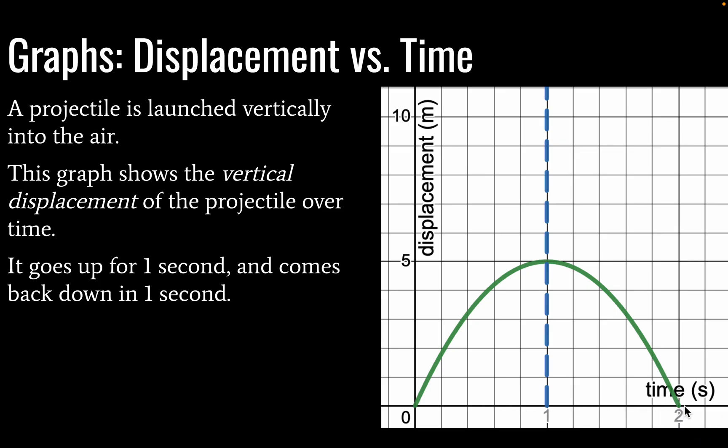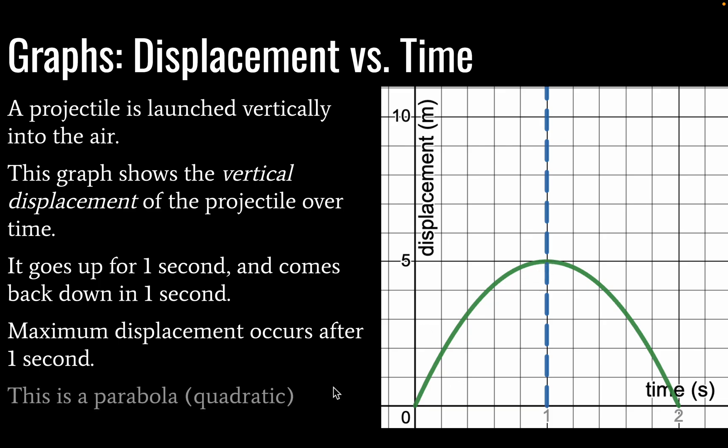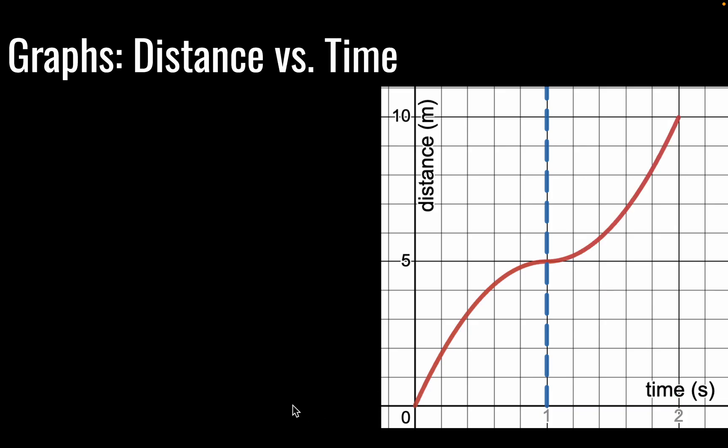So, we have a total travel time of two seconds. The maximum displacement is going to occur after one second. And we have here, of course, a parabola. So, if you've seen quadratic equations previously, you may recognize that this is one.